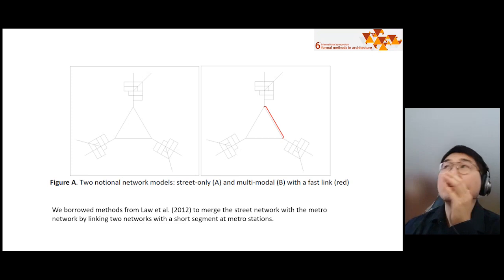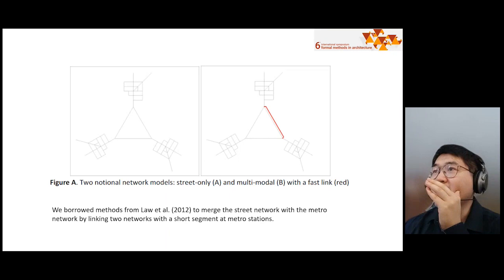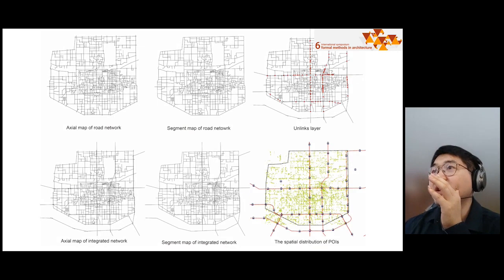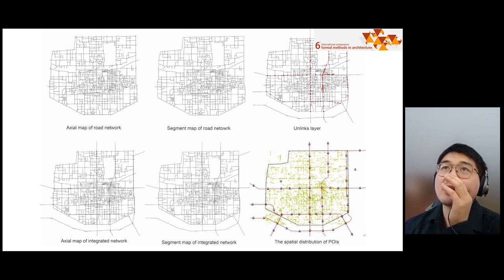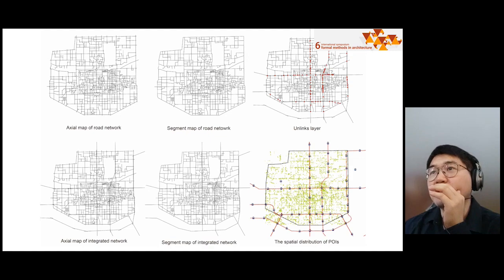One thing I would like to mention is the method of constructing the integrated network. We borrowed the method from Law et al. 2012, but with a few updates to better suit our case. Law et al. used a short segment and metro stations to link two networks. We also used this technique, with the advantage of particular intersections as natural links, where we did not specify unlinked points in unlinked layers. We construct an axial model and transform it into a segment model, then specify the unlinked layer to produce the integrated network. We also have the spatial distribution of POIs shown as green points.